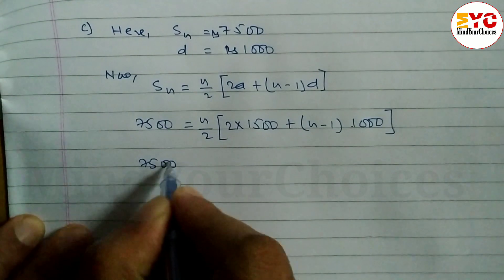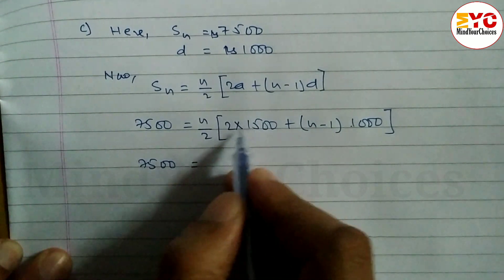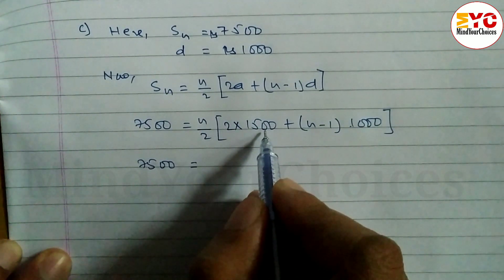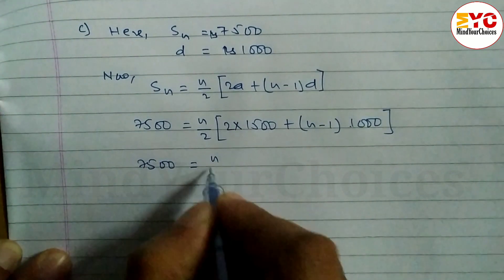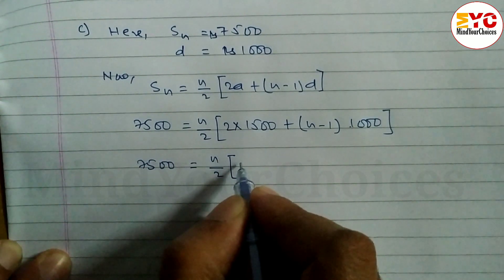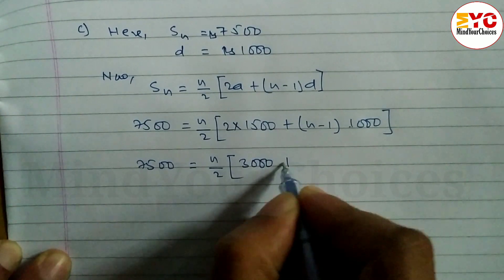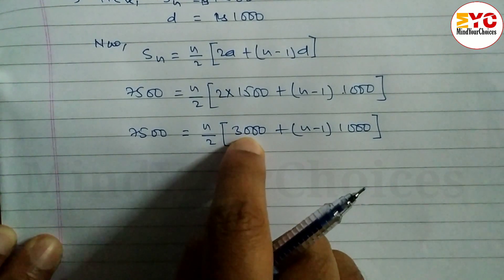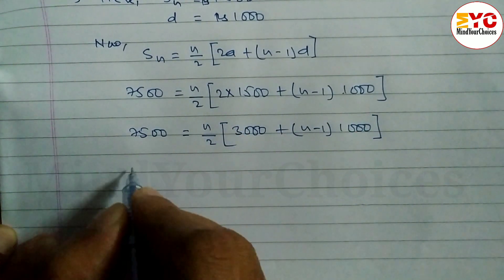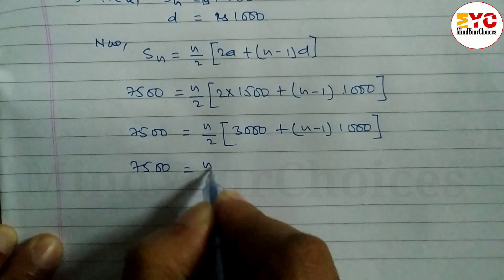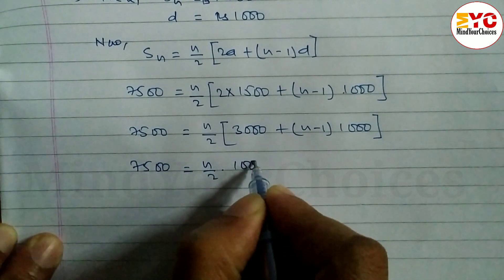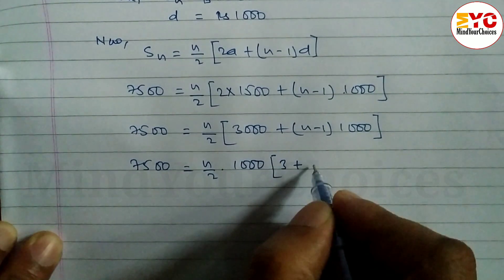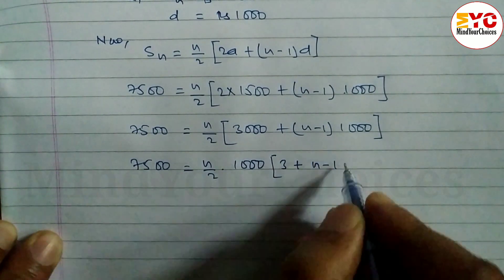So 7500 = n/2 × (3000 + (n−1)×1000). Taking 1000 as common: 7500 = n/2 × 1000 × (3 + (n−1)). Simplifying: 7500 = 500n × (n + 2).